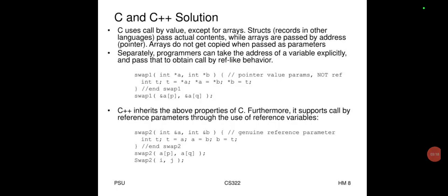C uses call by value except for arrays, structs, and records — other languages pass actual contents while arrays are passed by address pointer. Arrays are not copied when passed as parameters. Programmers can explicitly take the address of a variable and pass it to obtain call-by-reference-like behavior: swap(int *a, int b) { int t = *a; *a = *b; *b = t; }. C++ inherits these properties and additionally supports call by reference through reference variables.